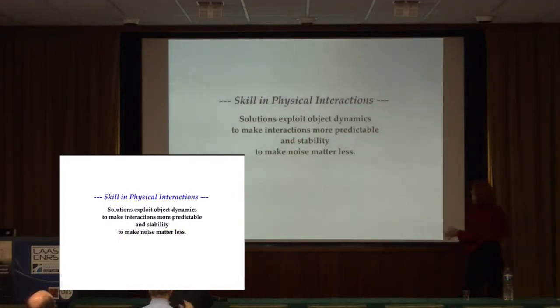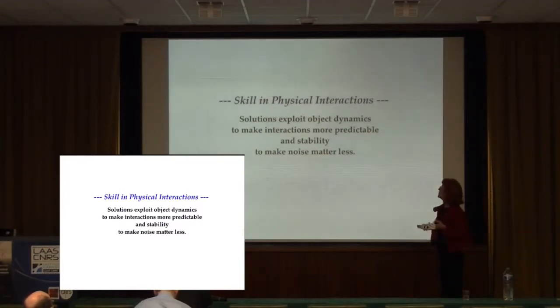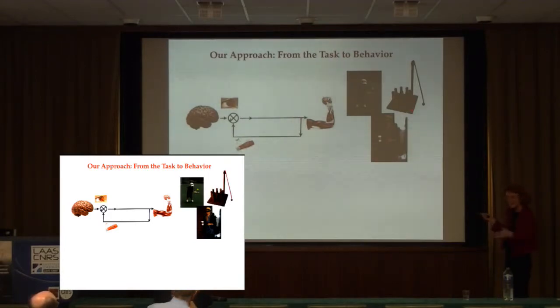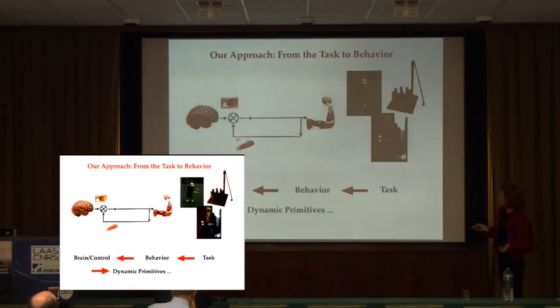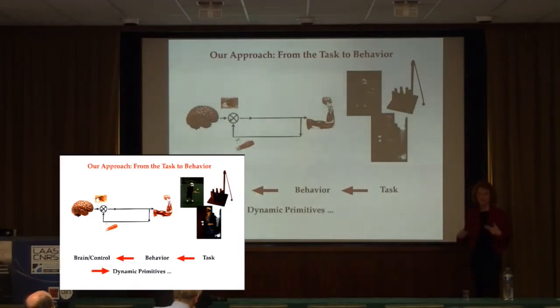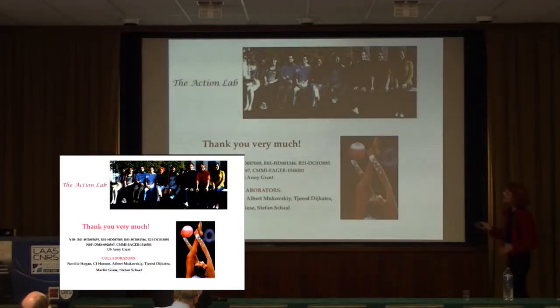Skill in physical interaction solutions exploit object dynamics to make interactions more predictable and stability, they exploit stability to make noise matter less. Just in summary, again, the approach that I'm taking is let's begin with analyzing the task rather than measuring and describing behavior because the task allows us then to make predictions and evaluate human performance. And just a little round back to what the future is to gain insight into what might matter for the controller and then link it to how the controller might employ dynamic primitives to actually execute this type of performance. And that's my thank you slide.